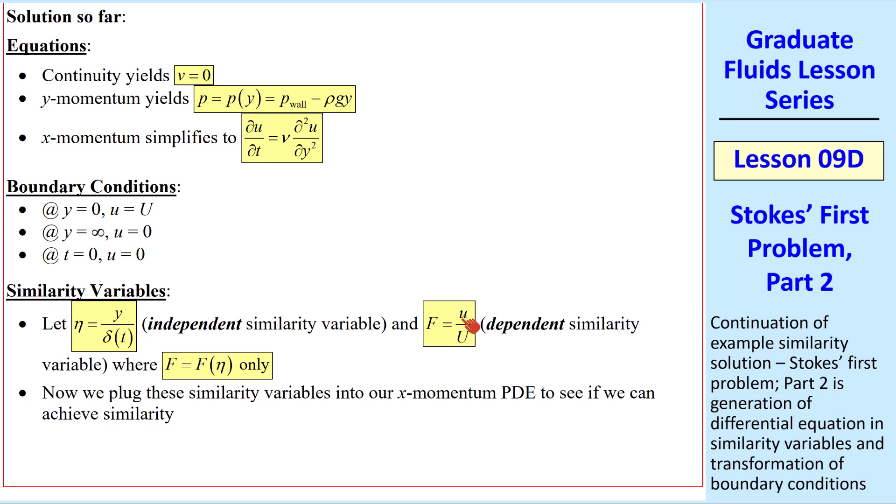First, let's write out u in terms of capital F and speed capital U. And I'll write F as a function of eta to help us with our algebra. The left-hand side has ∂u/∂t, which we write as U F'(η) ∂η/∂t.